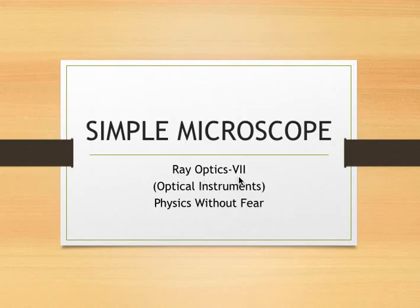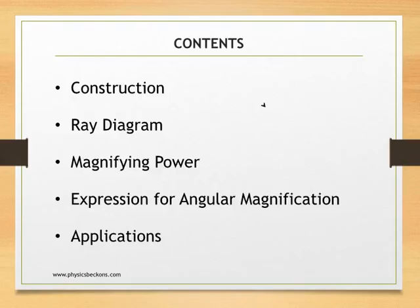In the present video, Ray Optics Part 7, we'll be studying about simple microscope, an optical instrument. In this video we'll be talking about the construction of simple microscope, the ray diagram—that is how we get the image—its magnifying power and expression for its angular magnification. We'll also list some of the applications of the simple microscope.